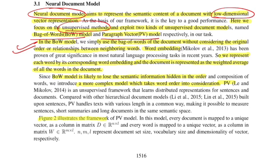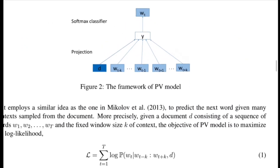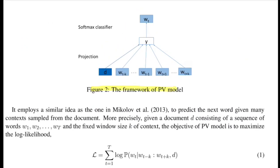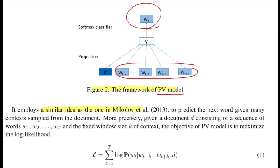Figure 2 illustrates the framework for the paragraph vector (PV) model. It has a similar idea to Word2Vec, where one algorithm predicts the center word given its context. In the PV model, the additional modification is an extra input — the document vector. You try to predict the center word for every context window of length k by inputting all words in that context along with the document vector. This forces the model to learn a vector representation for every word that captures not only the semantics within a window but is also conditioned on the overall semantics of the entire document.